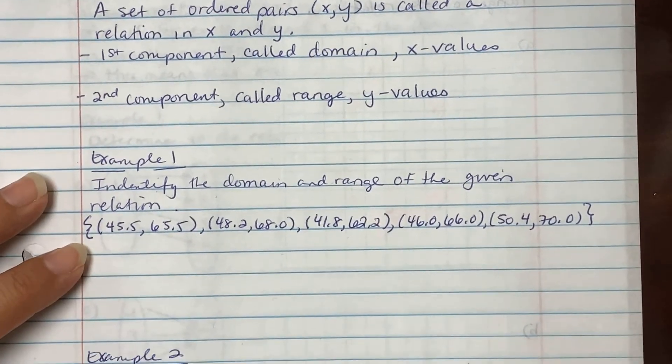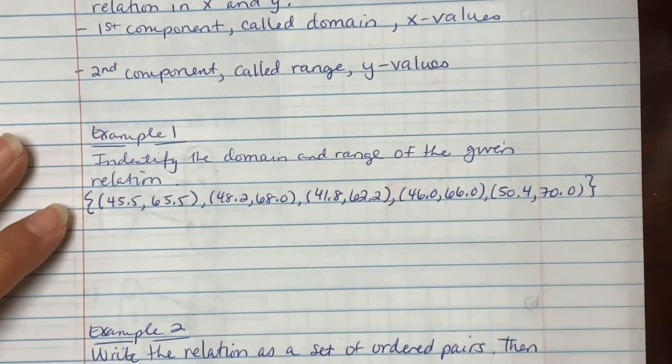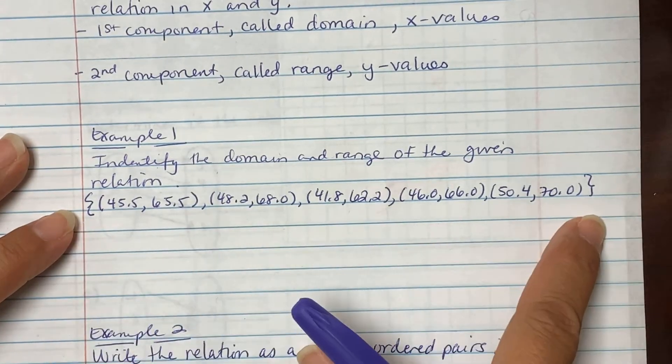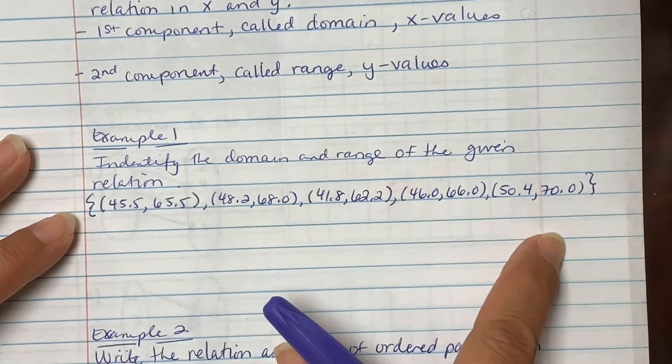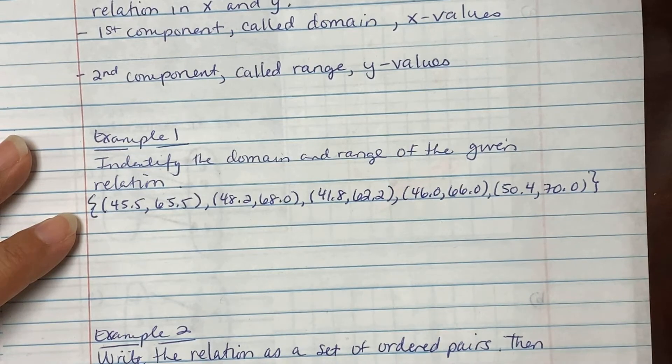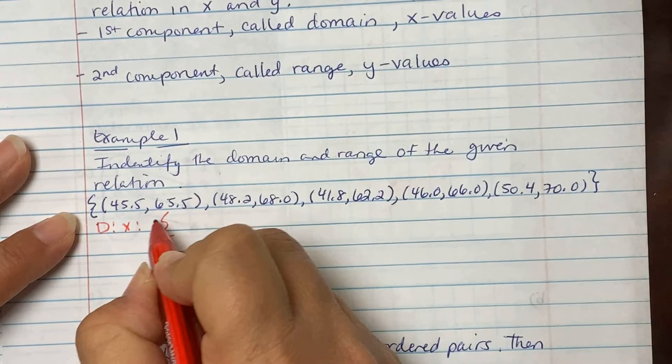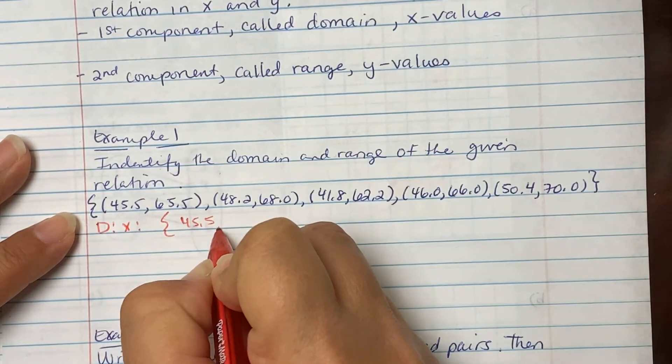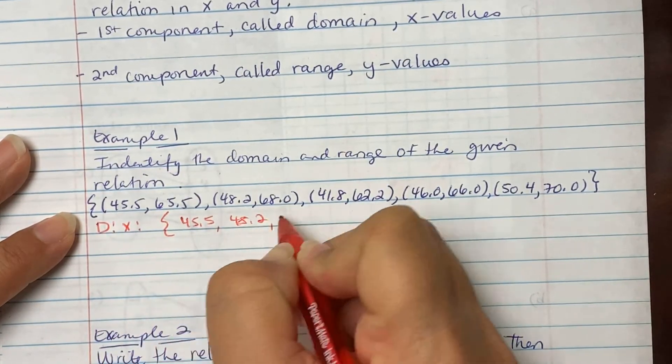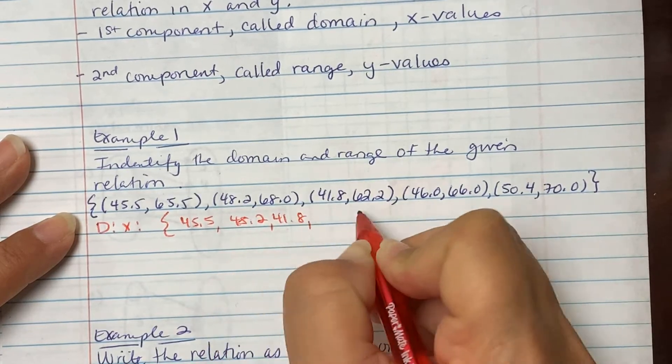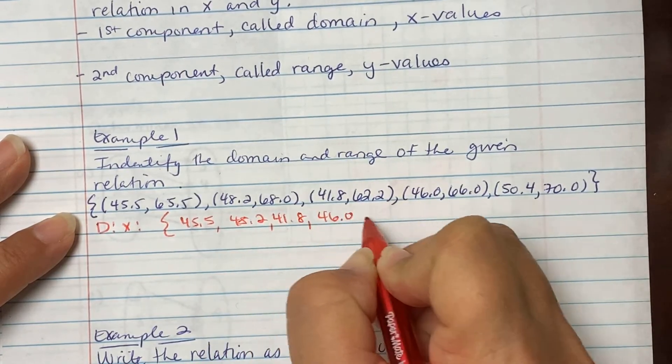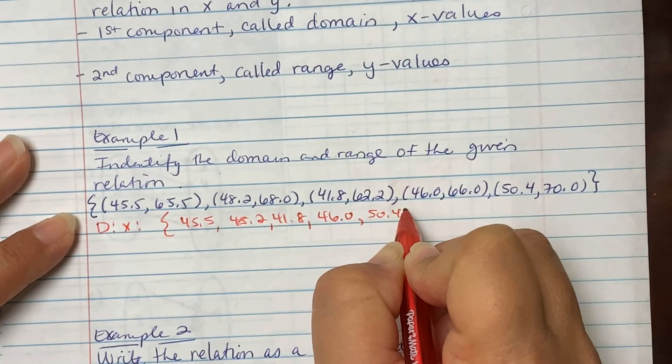Example one says identify the domain and range of the given relation. They gave us a set with ordered pairs and want you to identify the domain and range. Remember, the domain are your x's. So our domain is 45.5, 48.2, 41.8, 46.0, and 50.4.